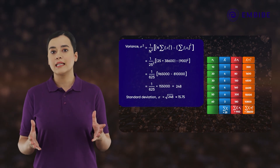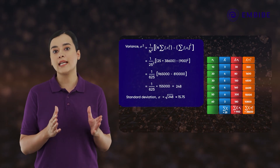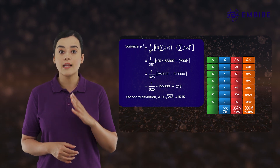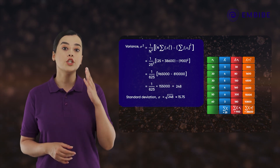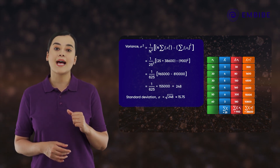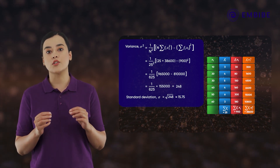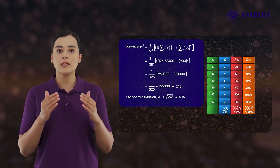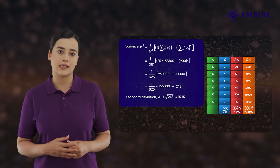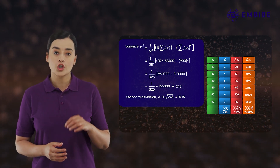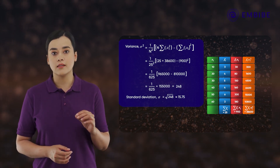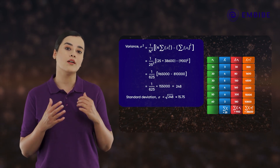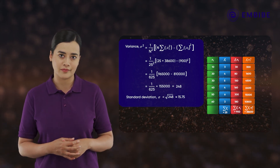Here you can see that though the calculations involved are fewer, the numbers tend to be huge, as we deal with the squares of the class marks multiplied by their frequencies. So this method is suitable for class marks that are smaller in value.